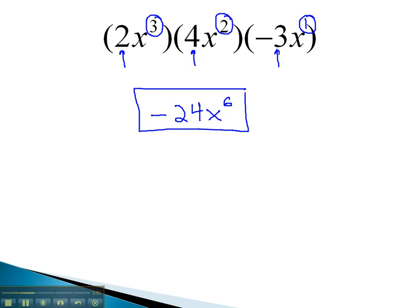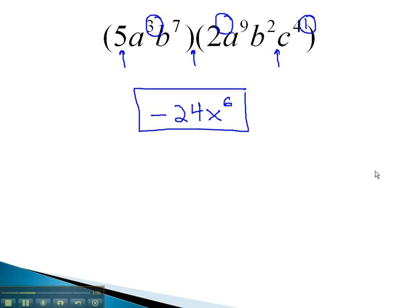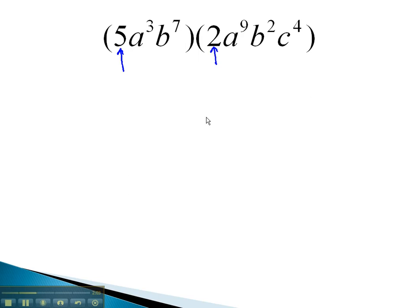Let's take a look at one more example using the product rule. In this problem, we will start by multiplying the numbers. 5 times 2 is 10.